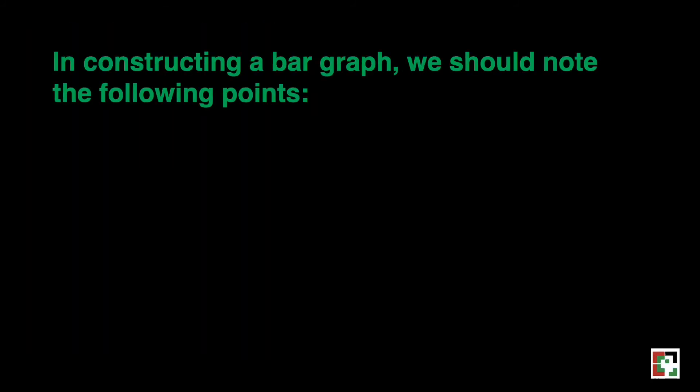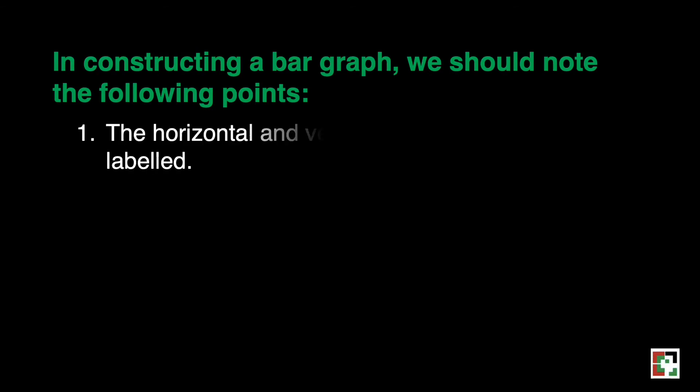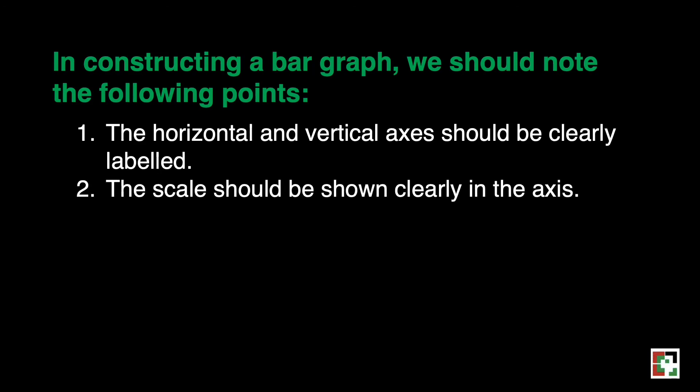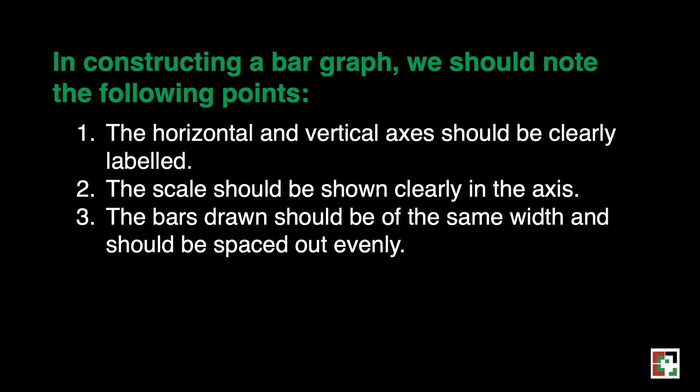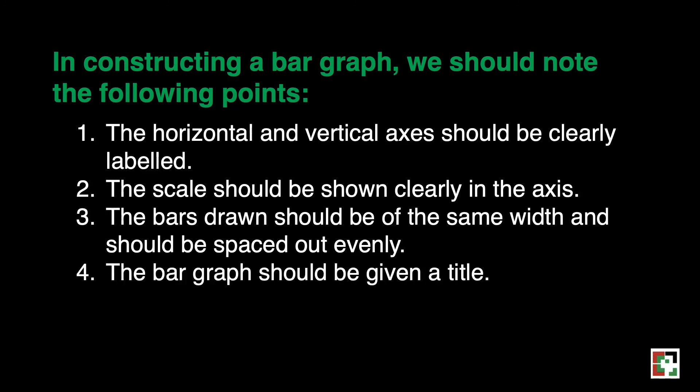In constructing a bar graph, we should note the following points. First, the horizontal and vertical axis should be clearly labeled. Second, the scale should be shown clearly in the axis. Third, the bars drawn should be of the same width and should be spaced out evenly. And lastly, the bar graph should be given a title.